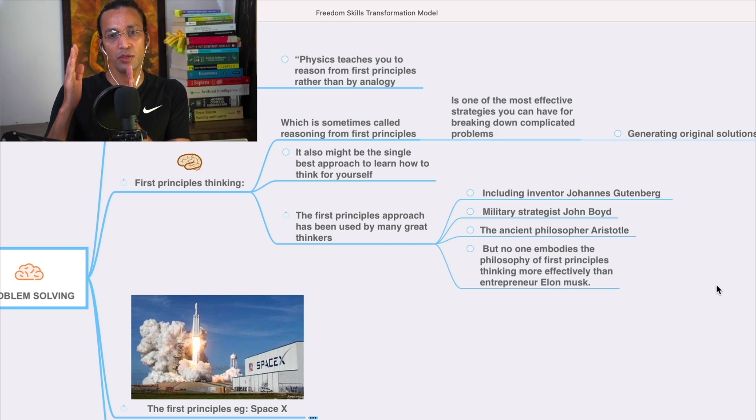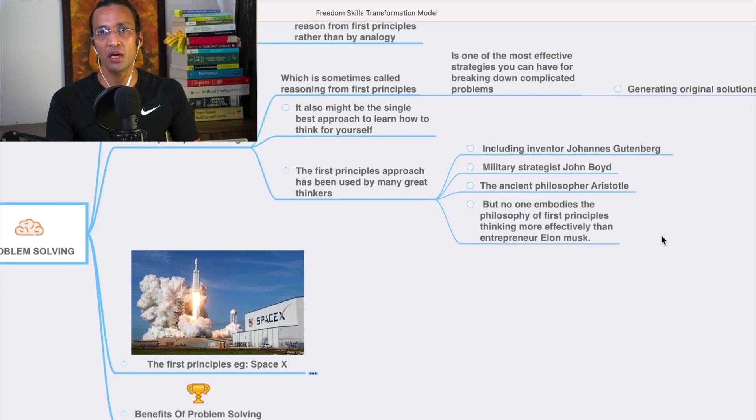He visited Russia because he wanted a spacecraft from them. They asked for eight million U.S. dollars cost per rocket, and he said that it is very high cost.